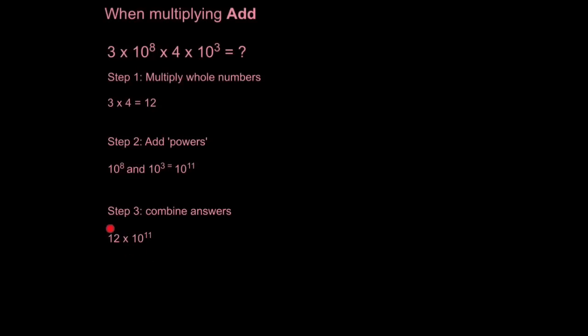But this isn't standard form, because the number has to be between 1 and 10. So we move the decimal point back 1 to make it 1.2, but by doing that, we have to multiply it by one more power, so 10 to the 12. So remember, when you have to move a decimal point back, you have to add one number here for every position moved back.